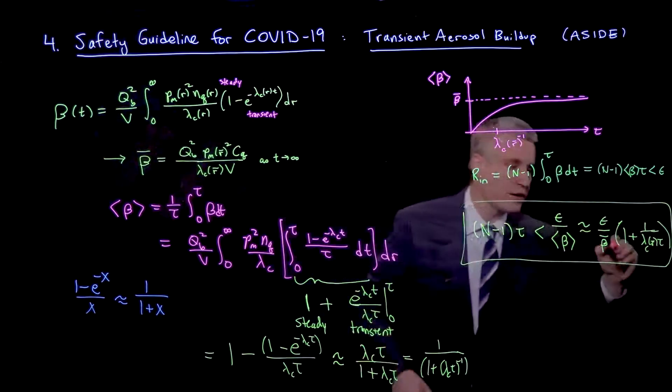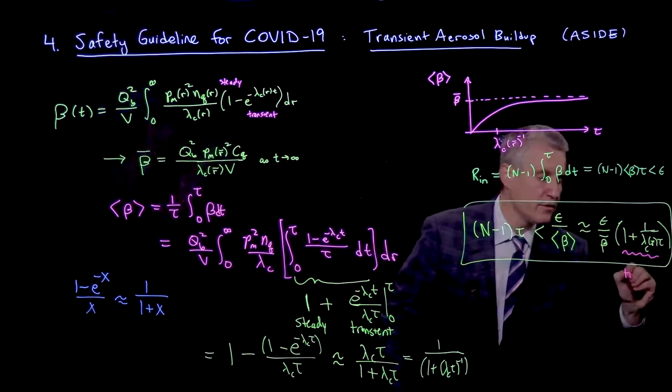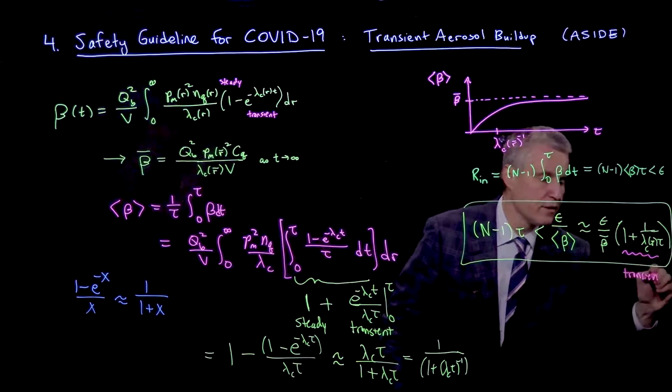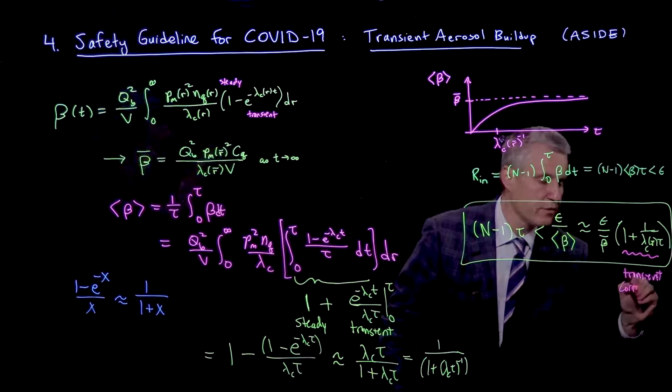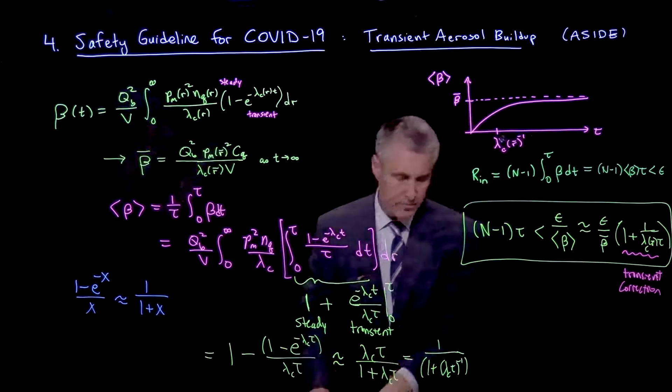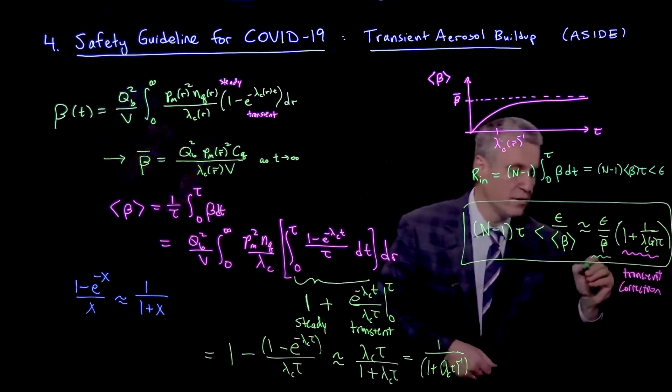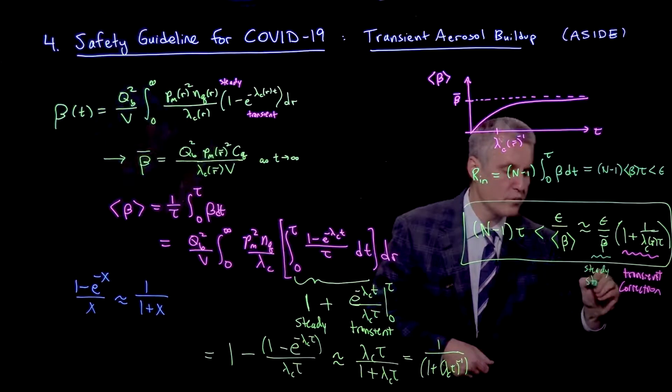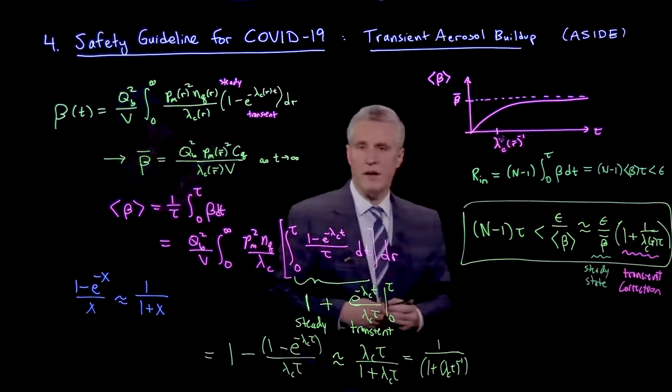So basically, this right here is the transient correction or modification. And this is the steady state formula, which we will more typically be using.